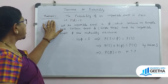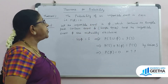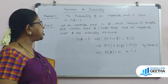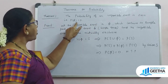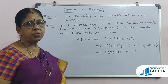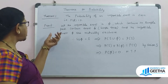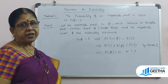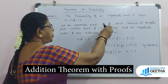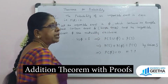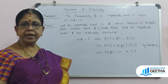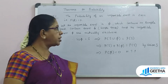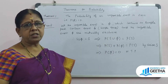First theorem: the probability of an impossible event is zero. That is, probability of π (the empty set) is equal to zero. We are going to prove this. In the impossible event π, there will not be any sample points.